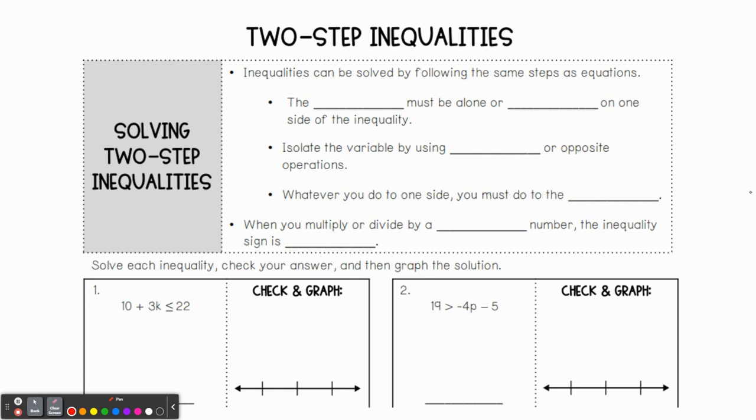So if you remember, inequalities can be solved by following the same steps as equations. The variable must be alone or isolated on one side of the inequality. This is really key, right? We're looking for that variable to be alone. So we isolate the variable by using inverse or opposite operations. In other words, if we see addition, then we're going to subtract. If we see multiplication, we're going to divide. And remember, whatever you do to one side, you must also do to the other.